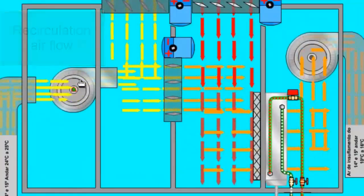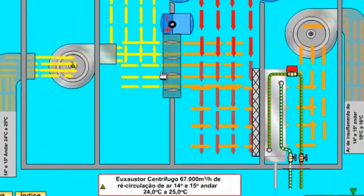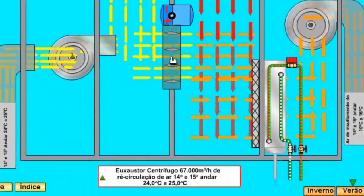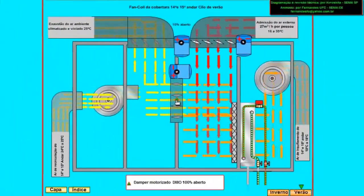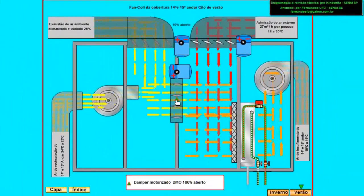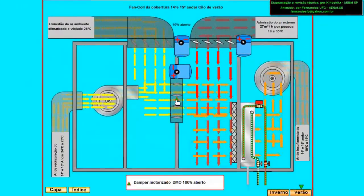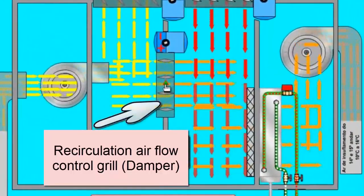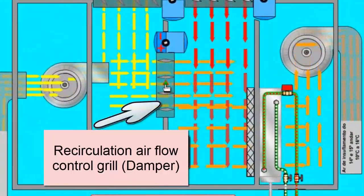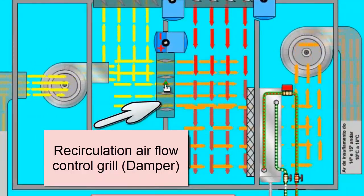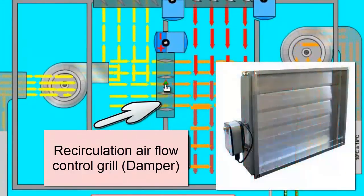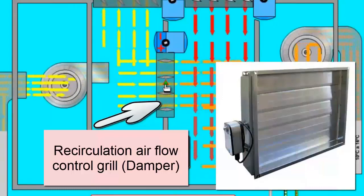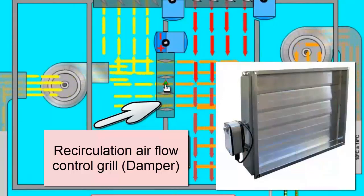Recirculation air control damper. In this system, the recirculation air flow is controlled by opening the air outlet of the fan by a percentage. In this case it is 100% open.